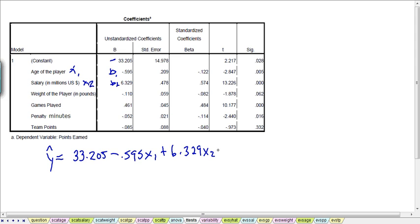The next one is negative, so it's negative .110X3, plus .461X4, minus .052X5, minus .085X6. So that's our regression equation for the model that predicts, is looking to predict the points earned by a player by the six factors or independent variables as listed in this table.